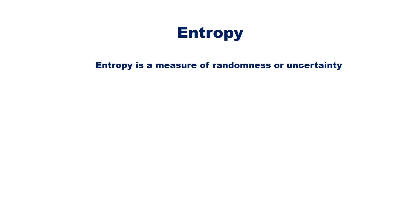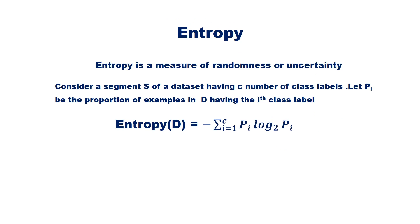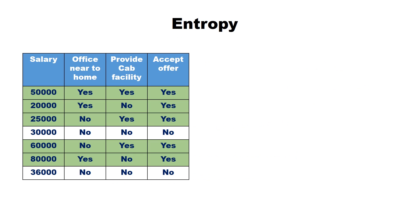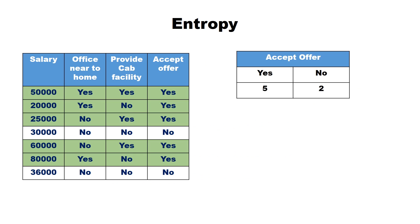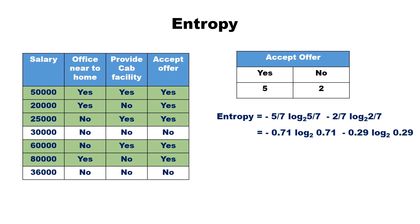Entropy is another measure of impurity — specifically a measure of randomness or uncertainty. Consider a segment D of a dataset having C class labels, with Pi being the proportion of examples having the ith class label. The entropy of D is given by: minus the summation over i = 1 to C of Pi log base 2 of Pi. Entropy is a measure between 0 and 1; the lower the entropy, the purer the node. For the same dataset: entropy = −(5/7)log₂(5/7) − (2/7)log₂(2/7) = −(0.71 × log 0.71) − (0.29 × log 0.29) = −(−0.35) − (−0.52) = 0.86.